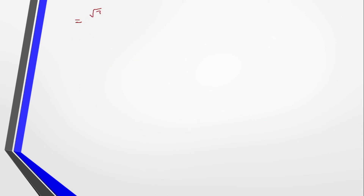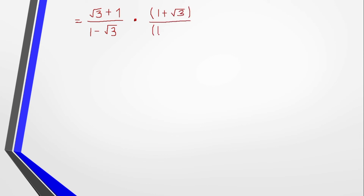We have square root of 3 plus 1 over 1 minus square root of 3. To rationalize, we multiply by (1 plus square root of 3) over (1 plus square root of 3).